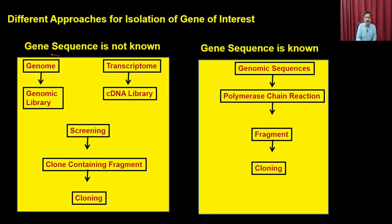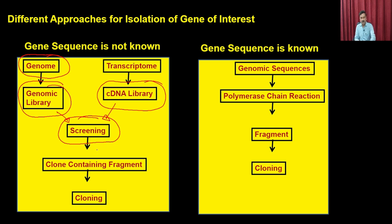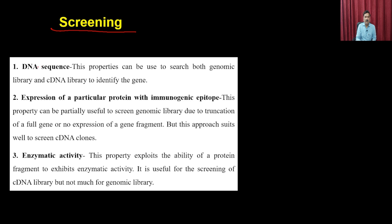So far we have discussed preparation of the genomic library and the cDNA library. Once you have generated either library, the next step is screening to identify the clone containing your gene of interest. There are three different screening methods: by DNA sequence, by expression of a particular protein using an immunogenic probe (antibody), and by enzymatic activity.